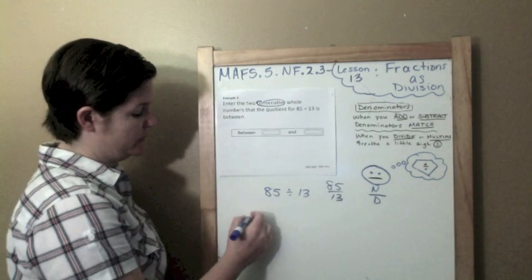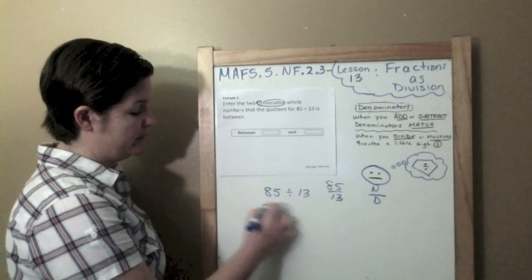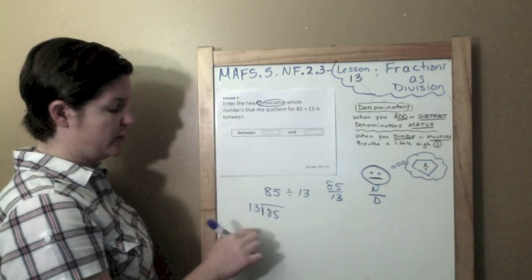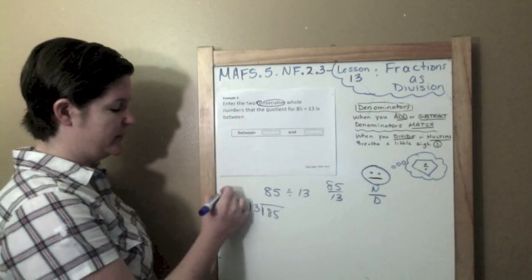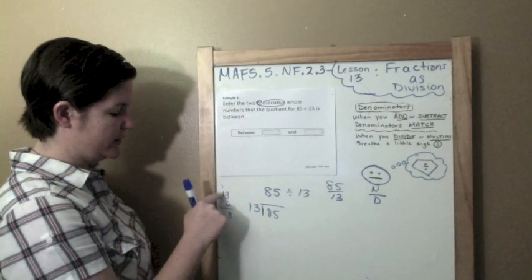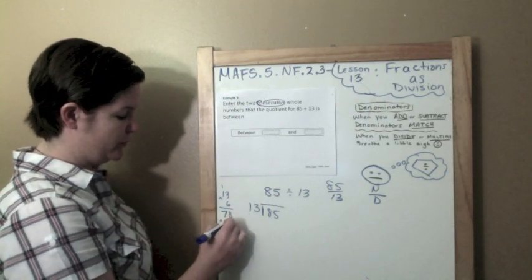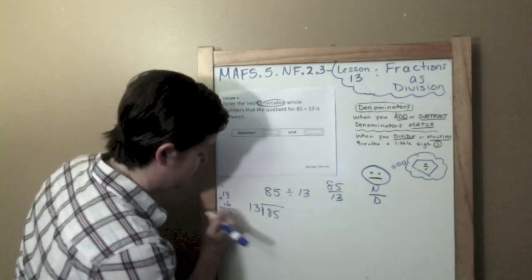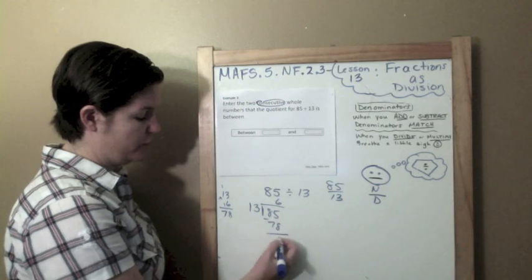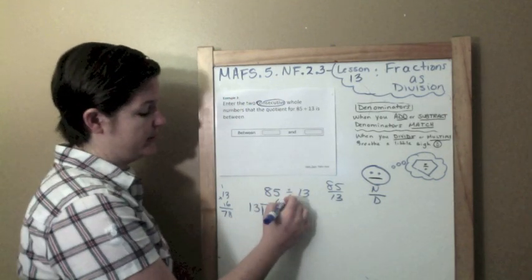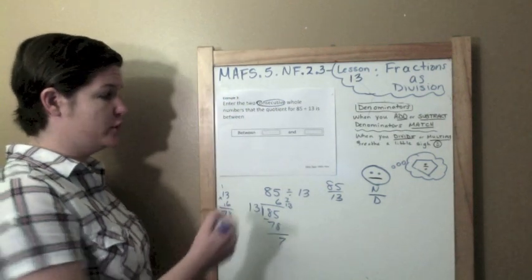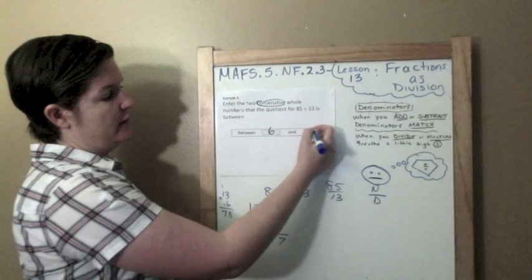So what I'm going to do is I'm going to write down 85 divided by 13 and see what my quotient is. So 13 goes into 85, I'm going to guess about six times. Let's see. Six times one would be one. That's 78. That's pretty close. One more 13 would be too high. So it would be six. Six times 13 is 78. When I subtract those two numbers, I get seven. So that would be six and seven-thirteenths. So what are the two consecutive whole numbers that this quotient is between? It's between the whole number six and the whole number seven.